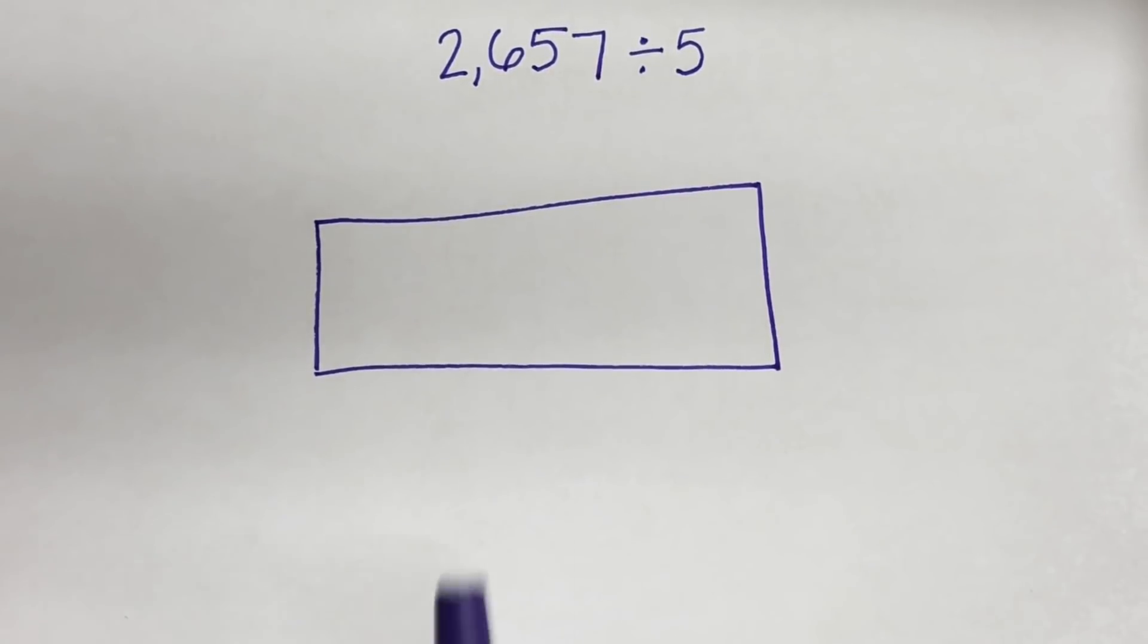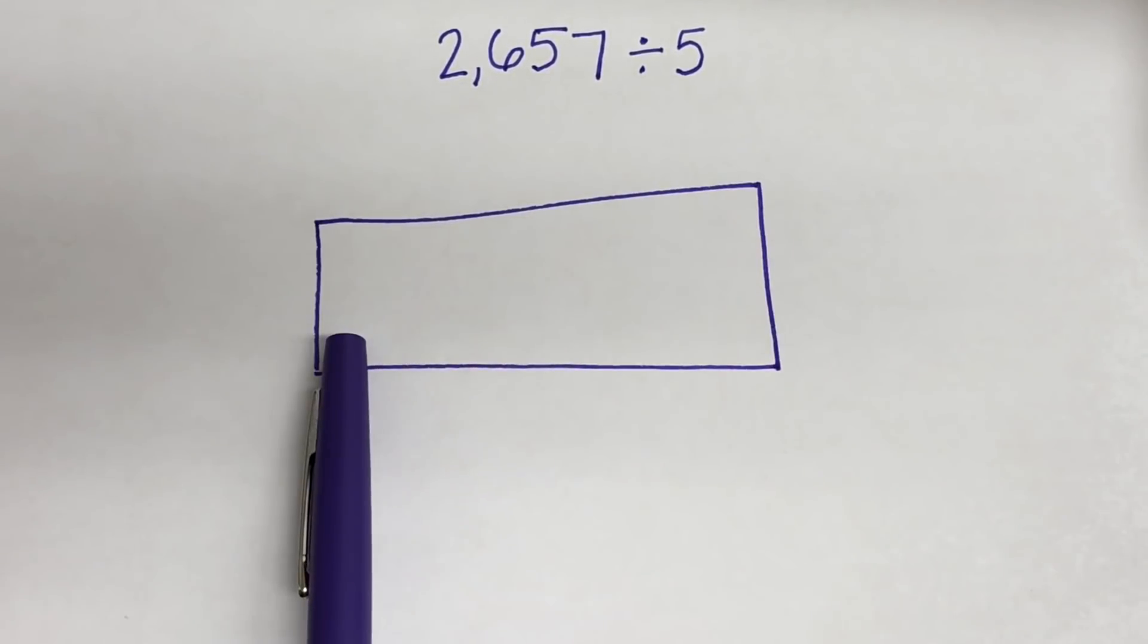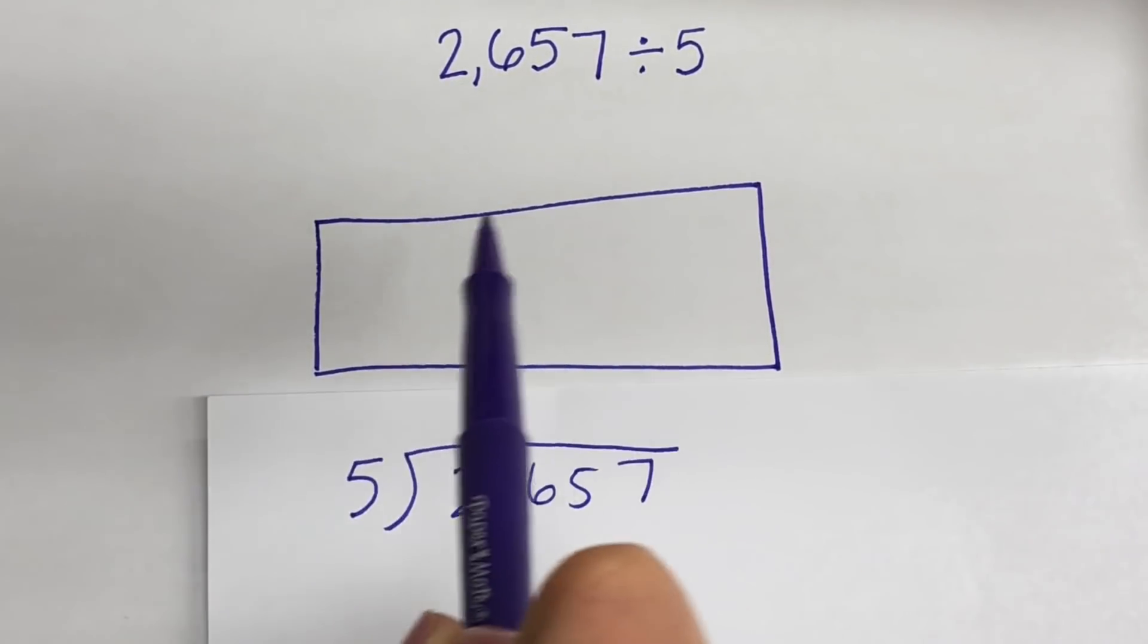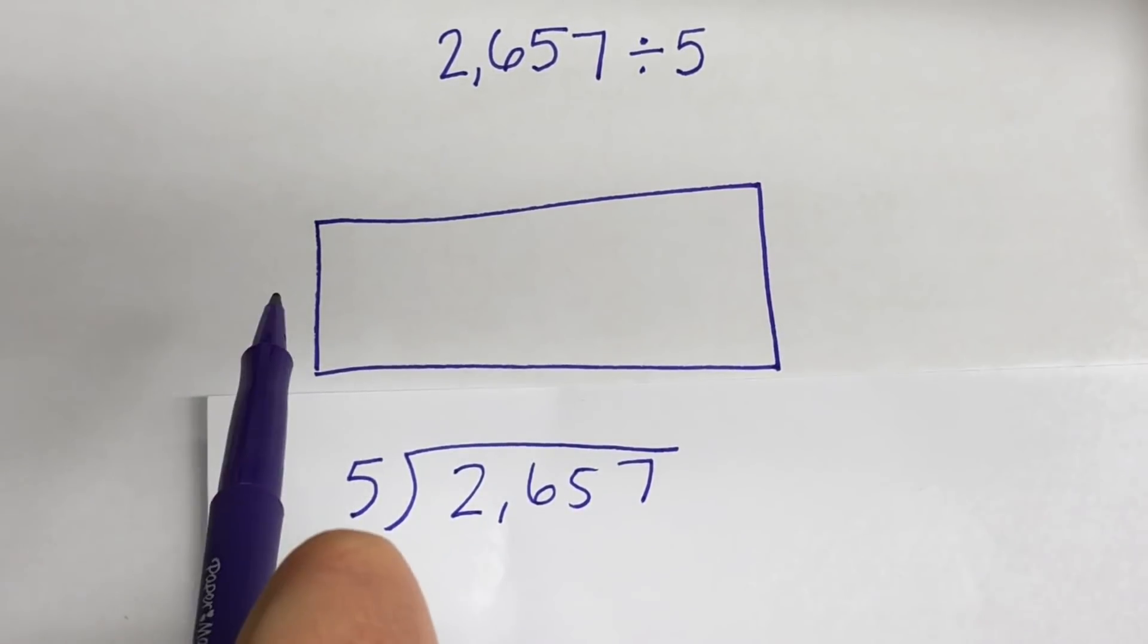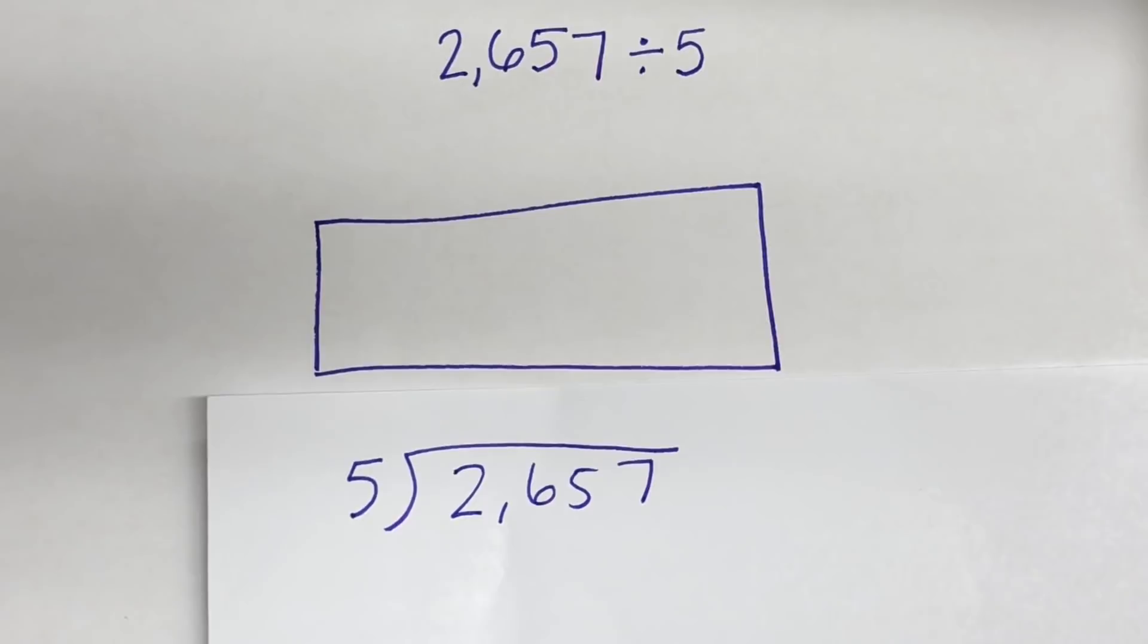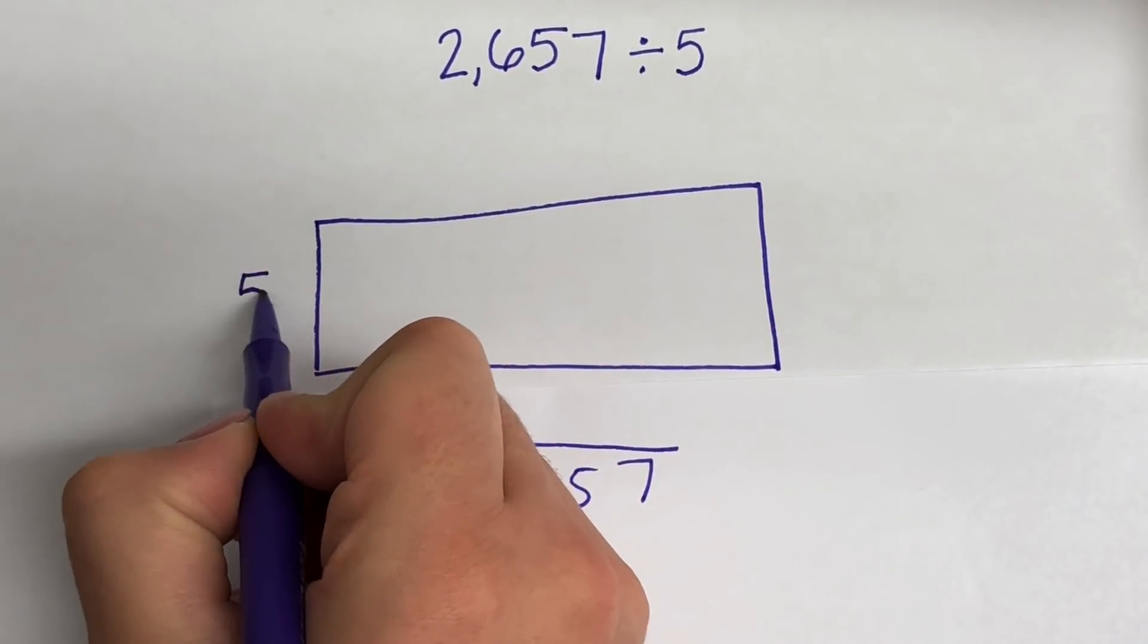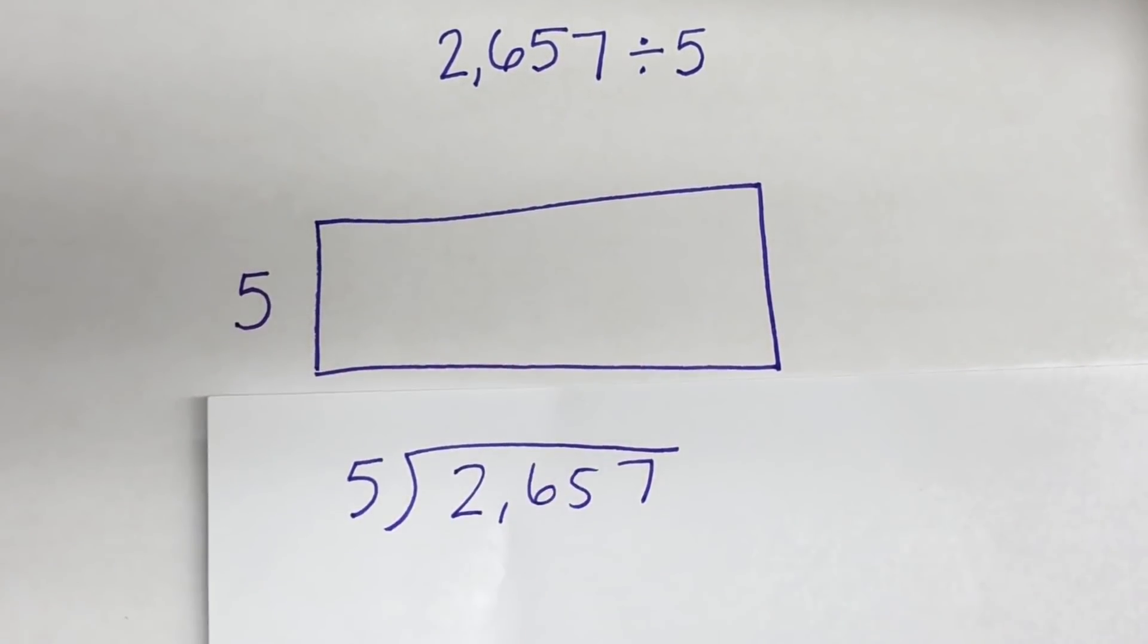And we need to look at this box or rectangle as if it is a division sign. Take a look at what your average division problem looks like. You have the large dividend under the sign and the divisor on the outside. So just that way, we will have our divisor 5 on the outside of the box.